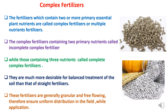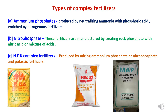Complex fertilizers are generally in granular form and free-flowing, therefore ensuring uniform distribution in the field during application. There are three types of complex fertilizers produced in India.